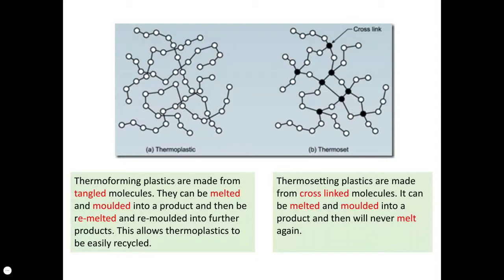Thermosetting polymers, on the other hand, once moulded into shape, can never be remelted and remoulded again. This is because those long strands of polymer chains are all linked together with cross-linked molecules. The forces connecting all of the long strands of polymers are very, very strong, and therefore it would require a high amount of energy to break them down. In essence, once set into a solid form, a thermosetting plastic can never melt again, which means it can't be remoulded and recycled in that way.